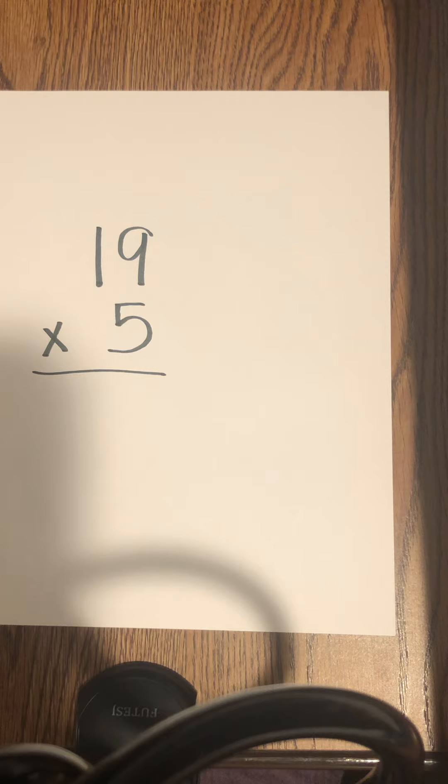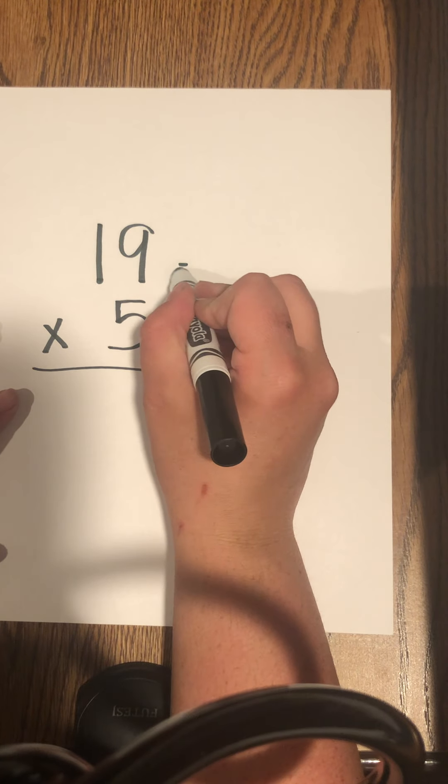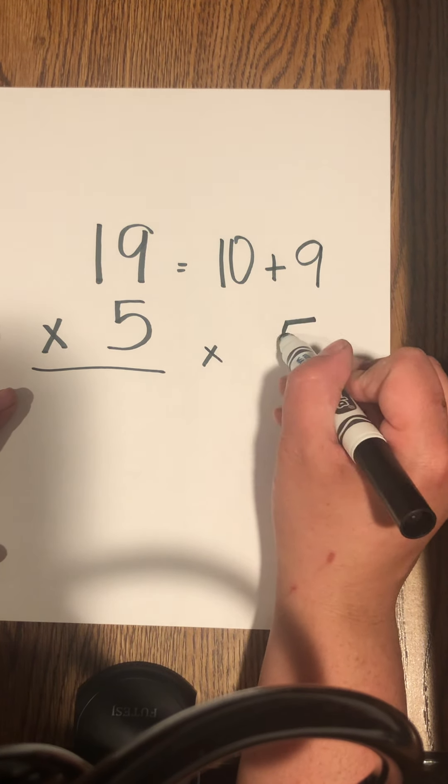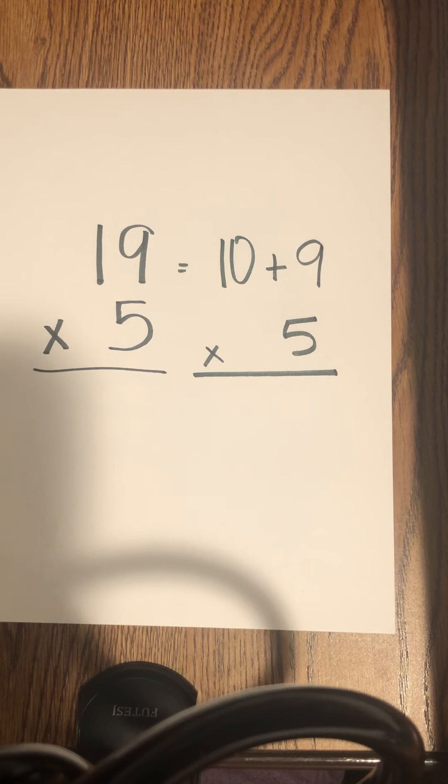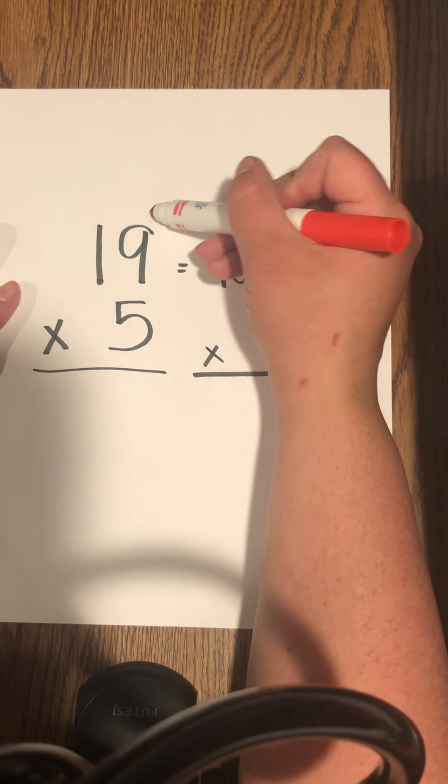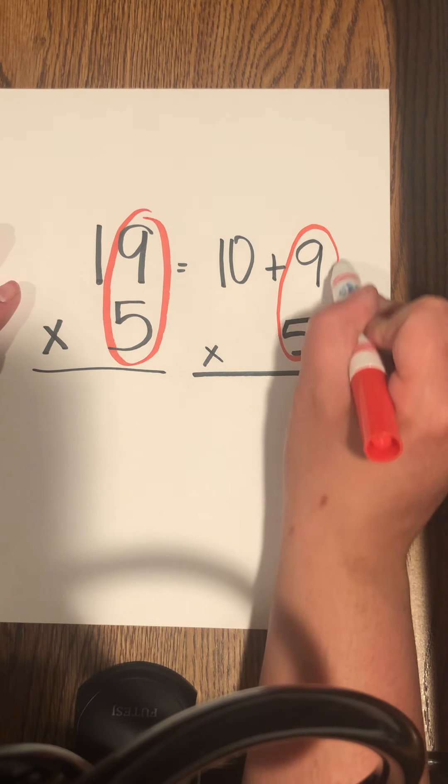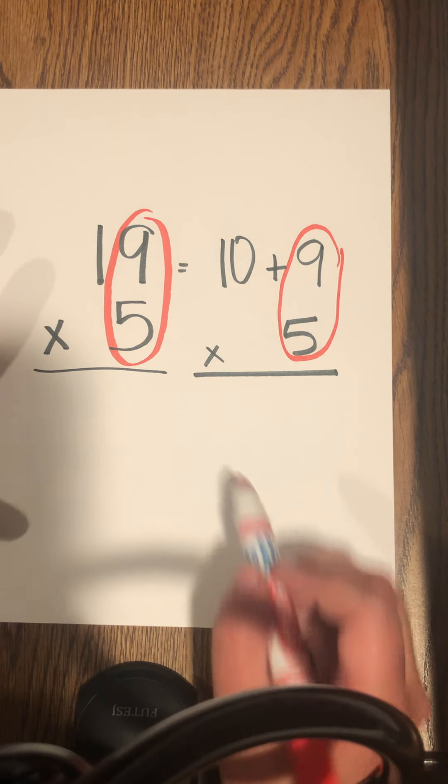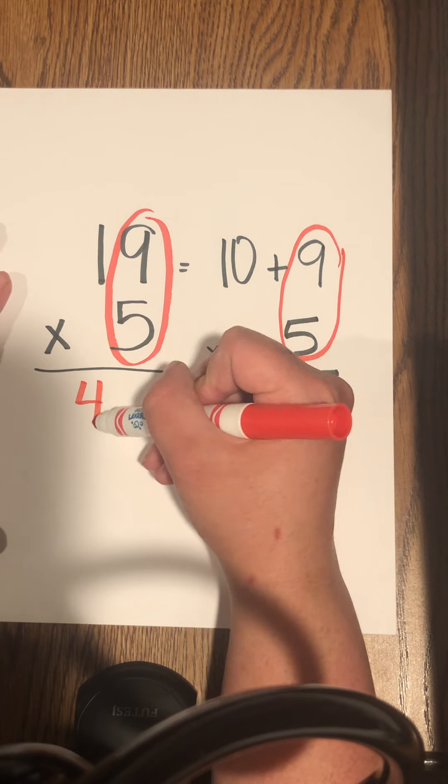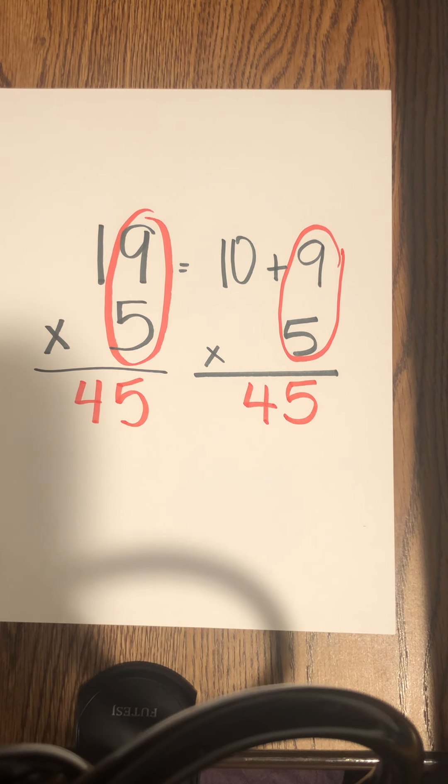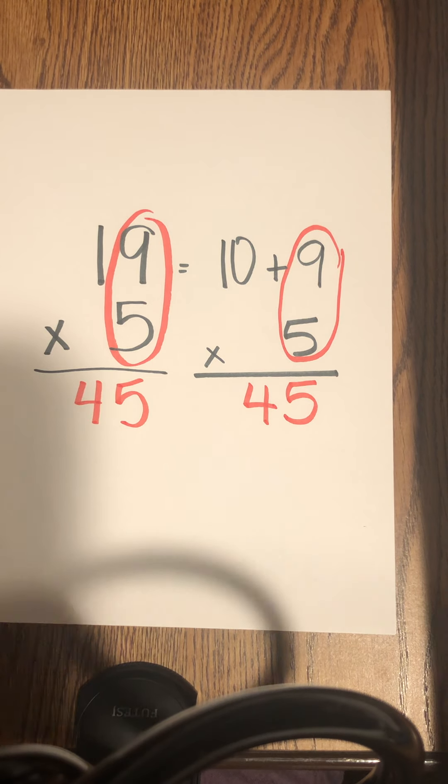So, we have 19 times 5. This is the same thing as 10 plus 9 times 5. All right, what place value do we start multiplying in? The ones. All right, this will be a quick one for you. 9 times 5 is 45. Okay, now you guys look at this one quick.